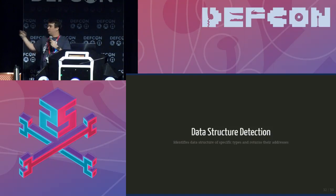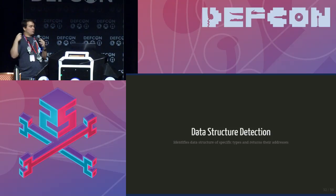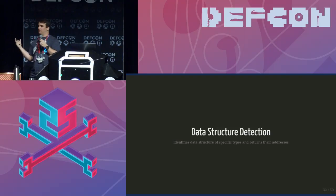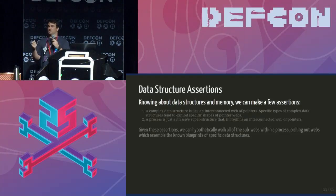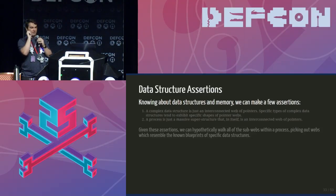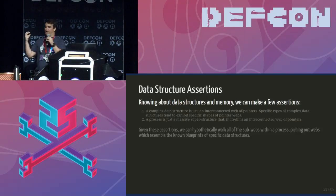Now we get to what I really want to talk about: data structure detection. The assertion is that a data structure is just a complex interconnected web of pointers — each pointing here, there, everywhere — but each data structure has very specific characteristics and shapes. If we can detect those characteristics and shapes, we can detect the entire data structure. Furthermore, a process is just a massive, super complex data structure. So if we take the web that is a process and sort through it, we can find all the data structures it contains.